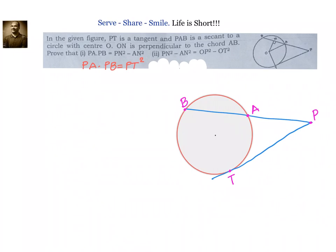In this problem, we are given a little additional help: we have to drop a perpendicular from the center to the chord, and that point is N. To solve this, we will first join the center to T, drop a perpendicular from the center to chord AB, and also join the center to A.